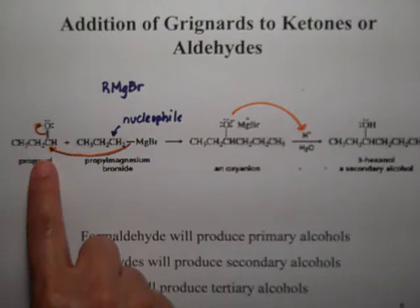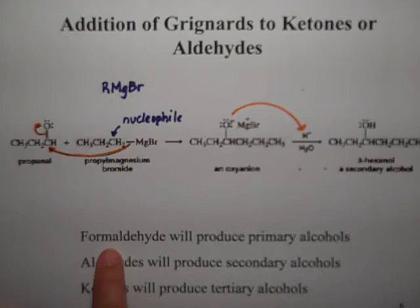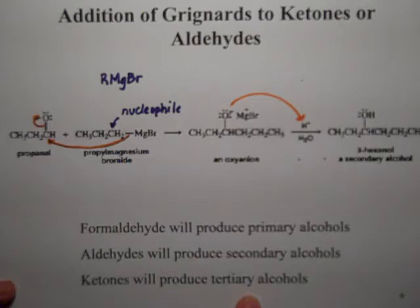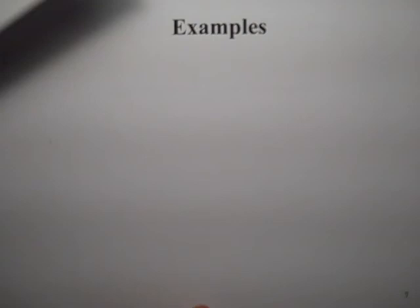Any time you attack an aldehyde with a Grignard, you're going to make a secondary alcohol. If you attack formaldehyde, that produces a primary alcohol. If you attack an aldehyde, you get a secondary alcohol. And if you attack a ketone, you're going to get a tertiary alcohol out of that reaction.